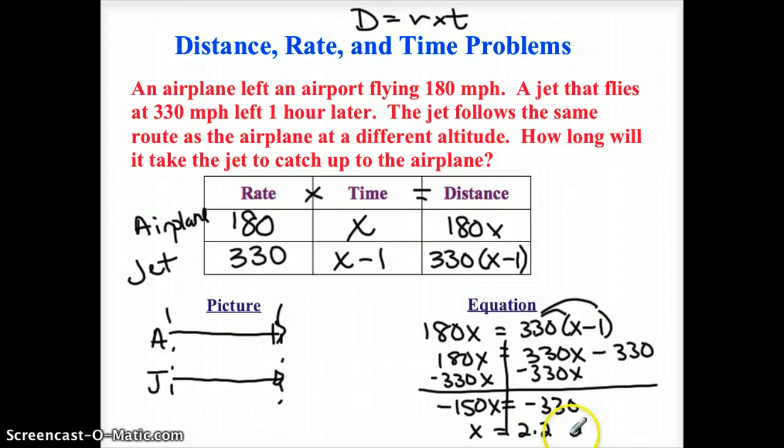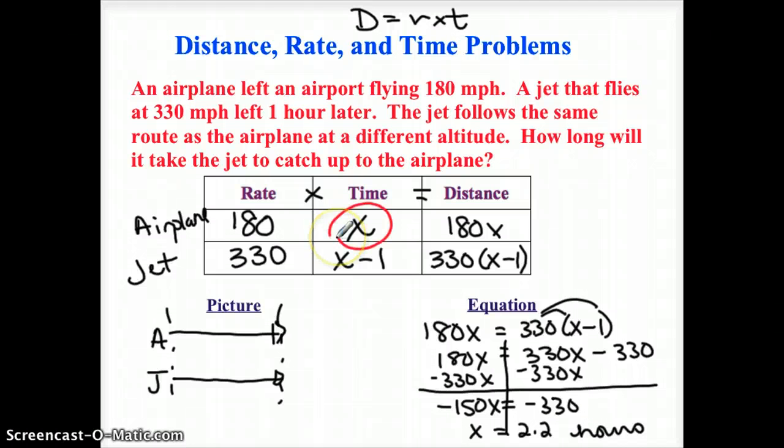Okay. And remember, I had written these in hours. And it looks like this problem here, X is my airplane's time, so that's 2.2 hours. And it looks like my jet is X minus one, so it should be 1.2 hours. And it asks how long the jet's going to take to catch up to the airplane, so the jet's going to be going 1.2 hours. And that's a good answer that I want.